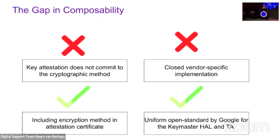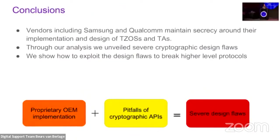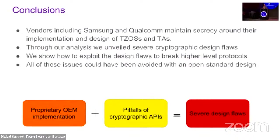As long as we have vendor-specific black-box designs, we can't actually prove the correctness of the composition. We hope our research will motivate a uniform open standard for the Keymaster to prevent such issues in the future. In conclusion, we saw the dangerous pitfalls that arise when the cryptographic design is kept secret. We'd like to argue that the cryptographic design should be reviewed by independent researchers and should not rely on the difficulty of reverse-engineering proprietary systems.